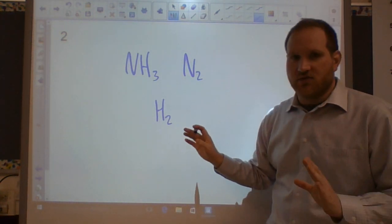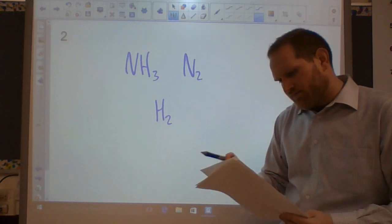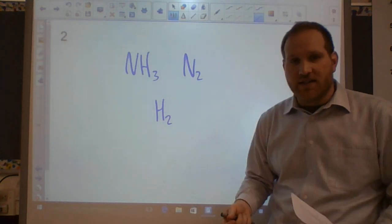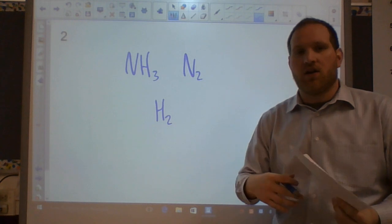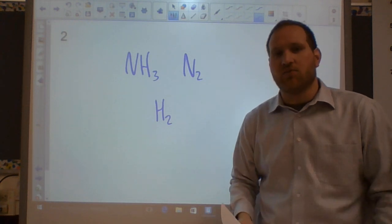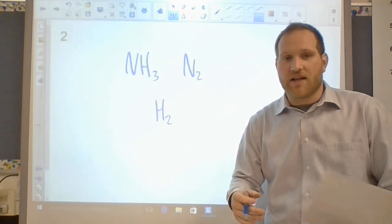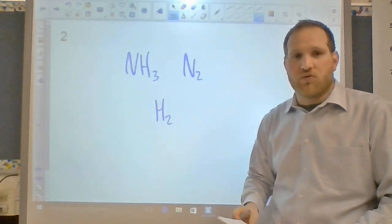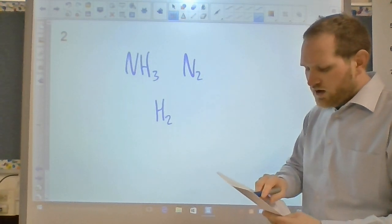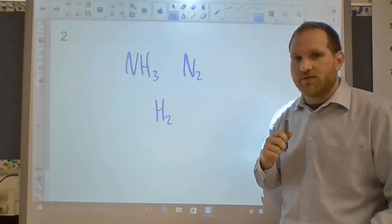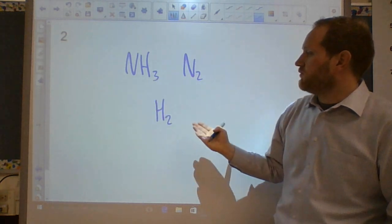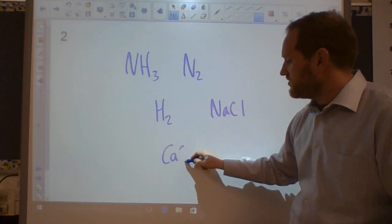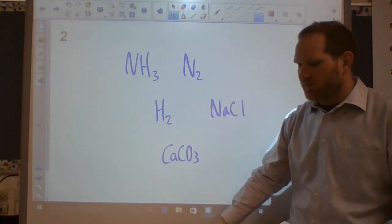The difference between molecule and compound comes in here. An element is one of the 118 substances on the periodic table in which all atoms are the same type — same number of protons, though isotopes can have different neutrons. A compound is when you have two or more different elements bonded together — NH3, NaCl, CaCO3 are examples.